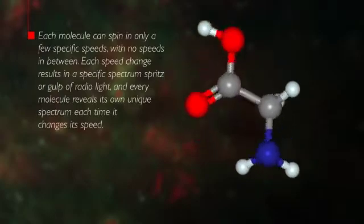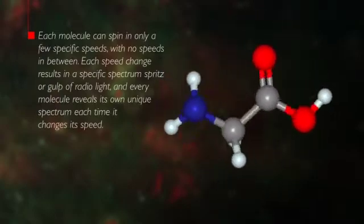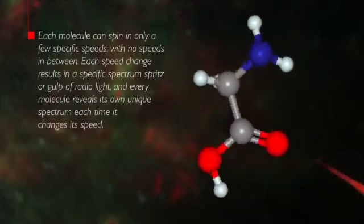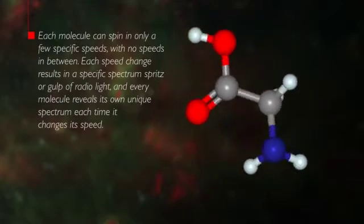Each molecule can spin in only a few specific speeds, with no speeds in between. So each speed change results in a specific spectrum spritz, or gulp, of radio light.